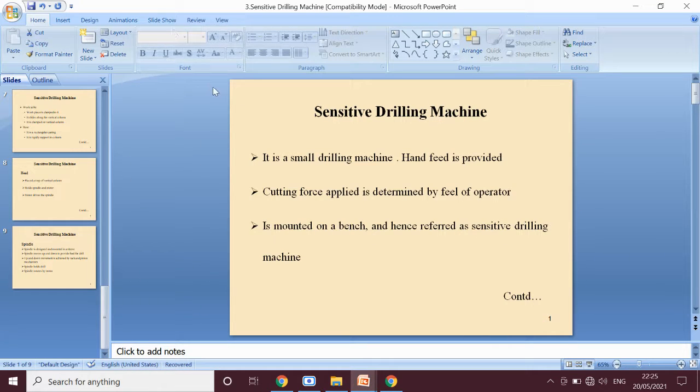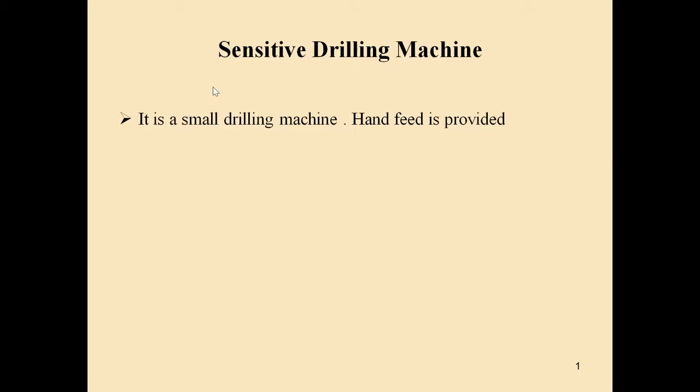The next type is the sensitive drilling machine, which is the second type of drilling machine. It is a small drilling machine. This sensitive drilling machine is very small and can be seen in our workshop.